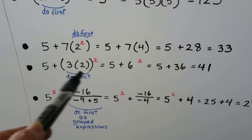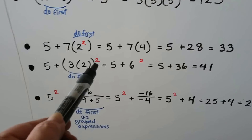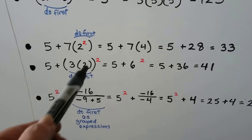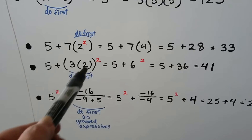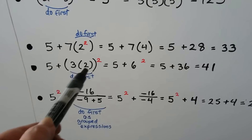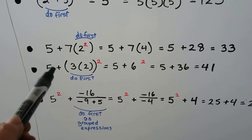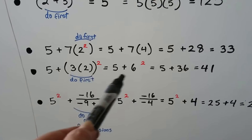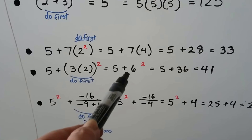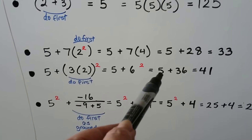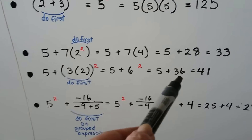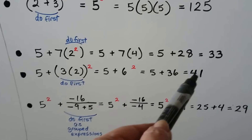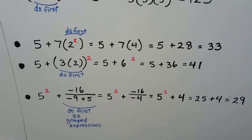In this one, we've got the exponent on the outside of the parentheses. We have to multiply 3 times 2 first inside the parentheses and get 6. That means we have 5 plus 6 squared. 6 times 6 is 36, so we have 5 plus 36, which means we have 41.